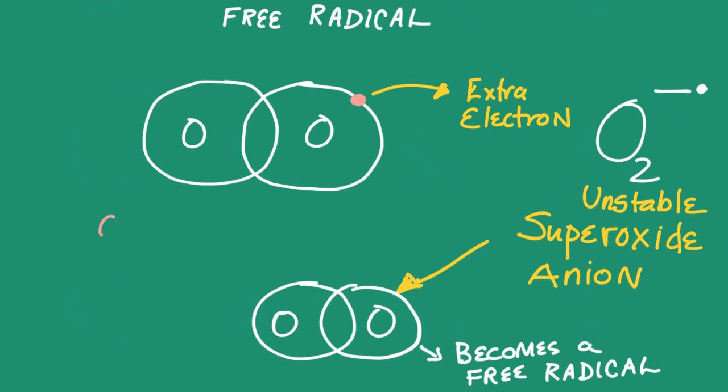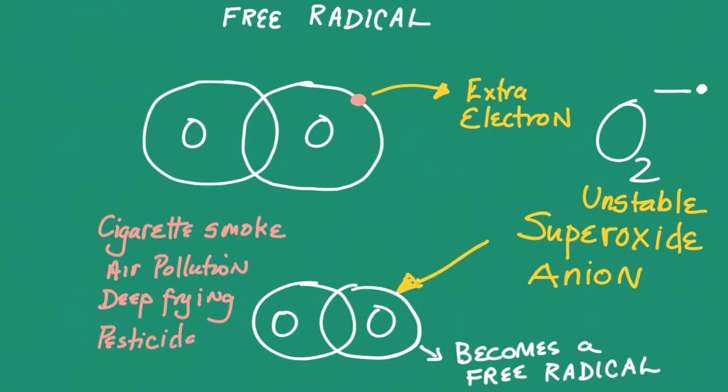Free radicals are formed when we inhale cigarette smoke, are exposed to air pollution, eat foods that are fried. Deep frying can result in the formation of free radicals, and exposure to pesticides, to name a few.